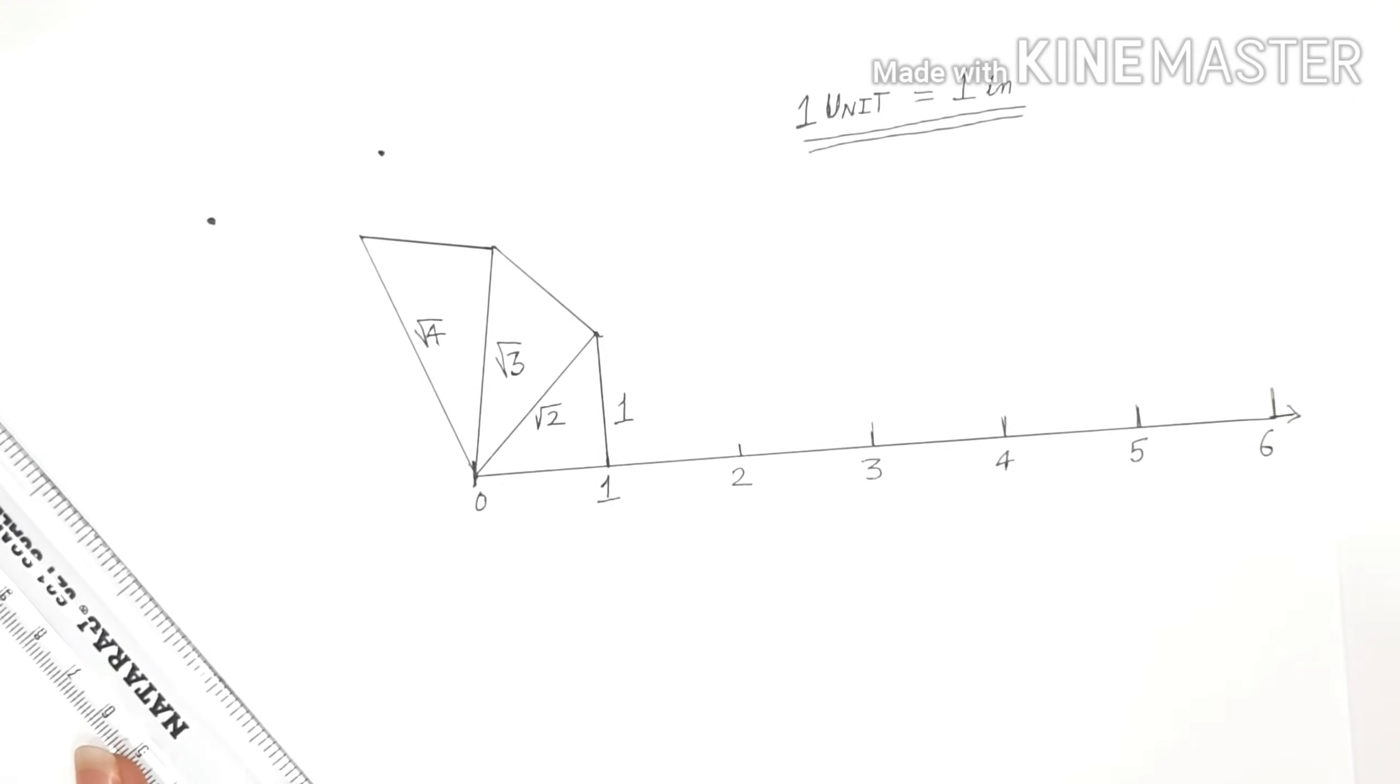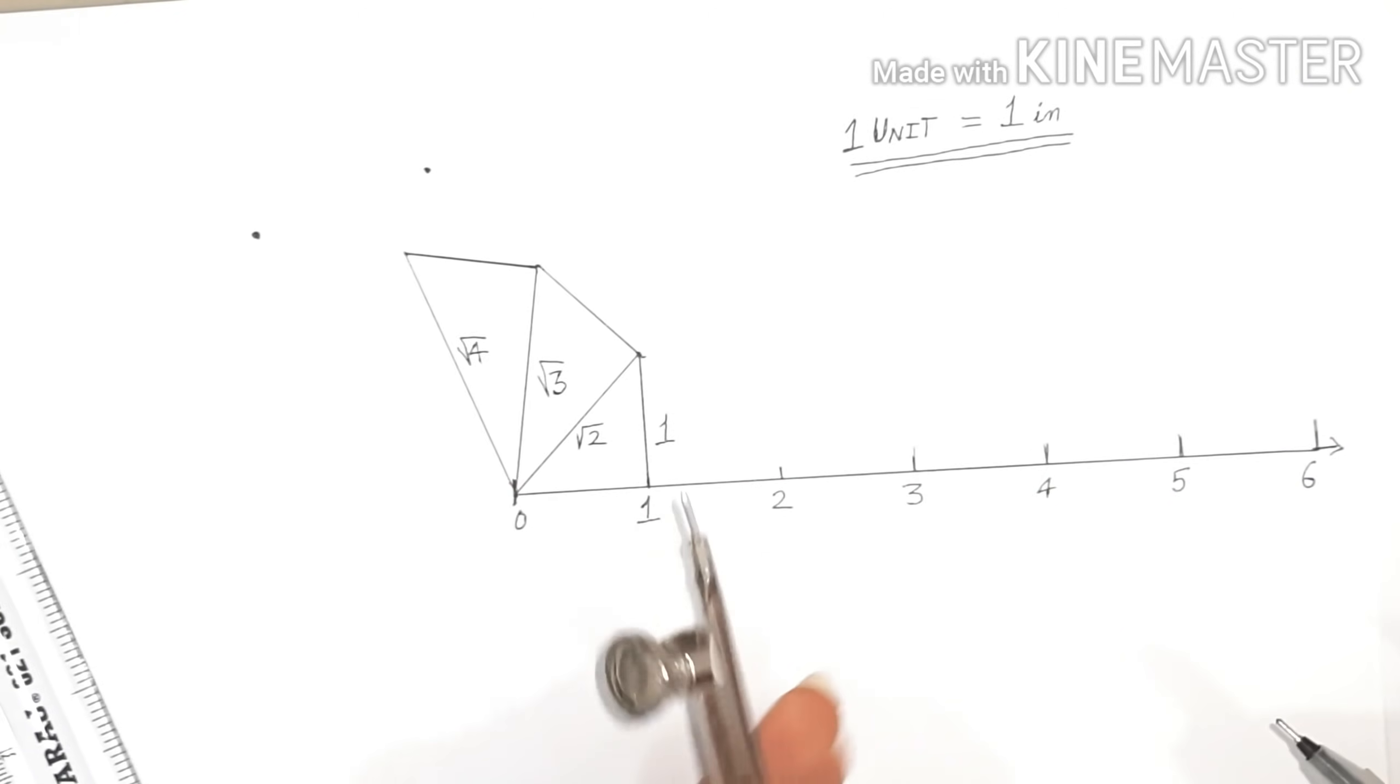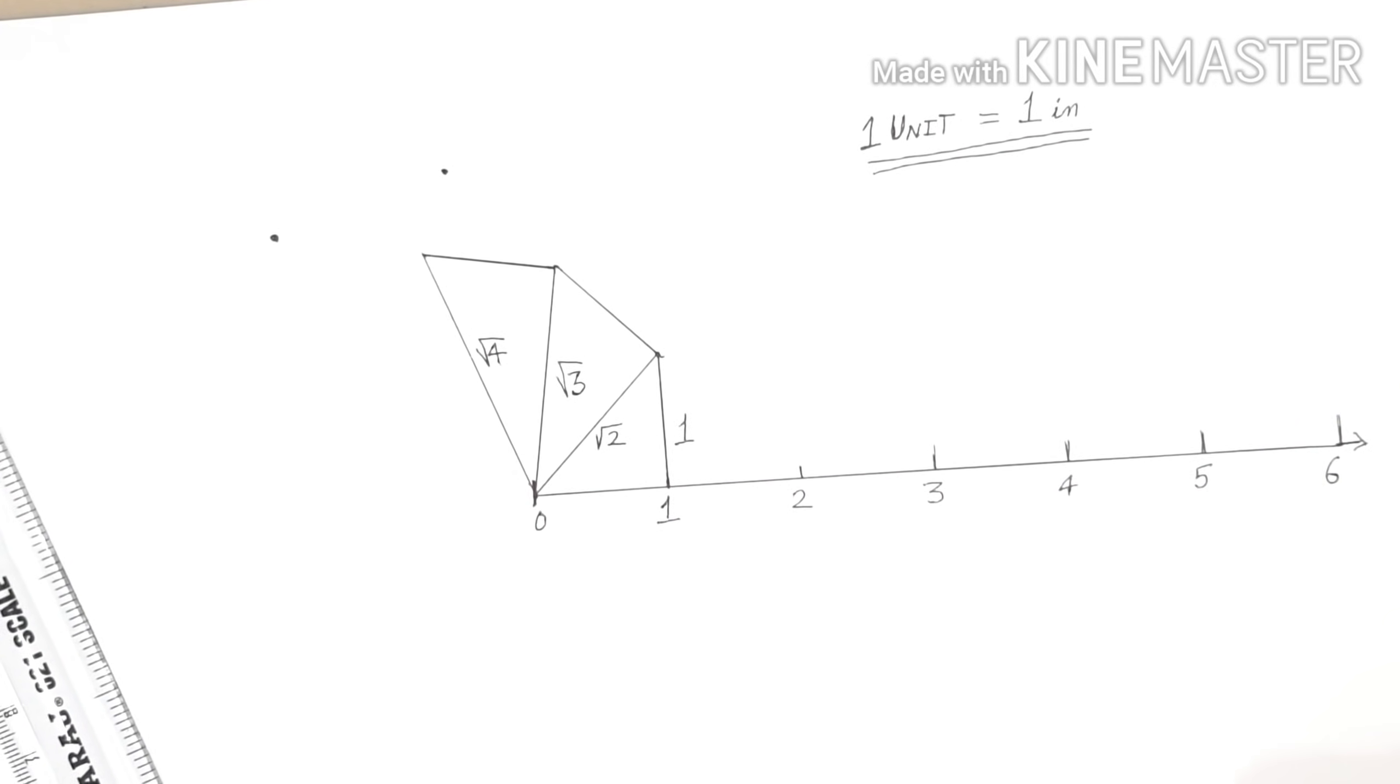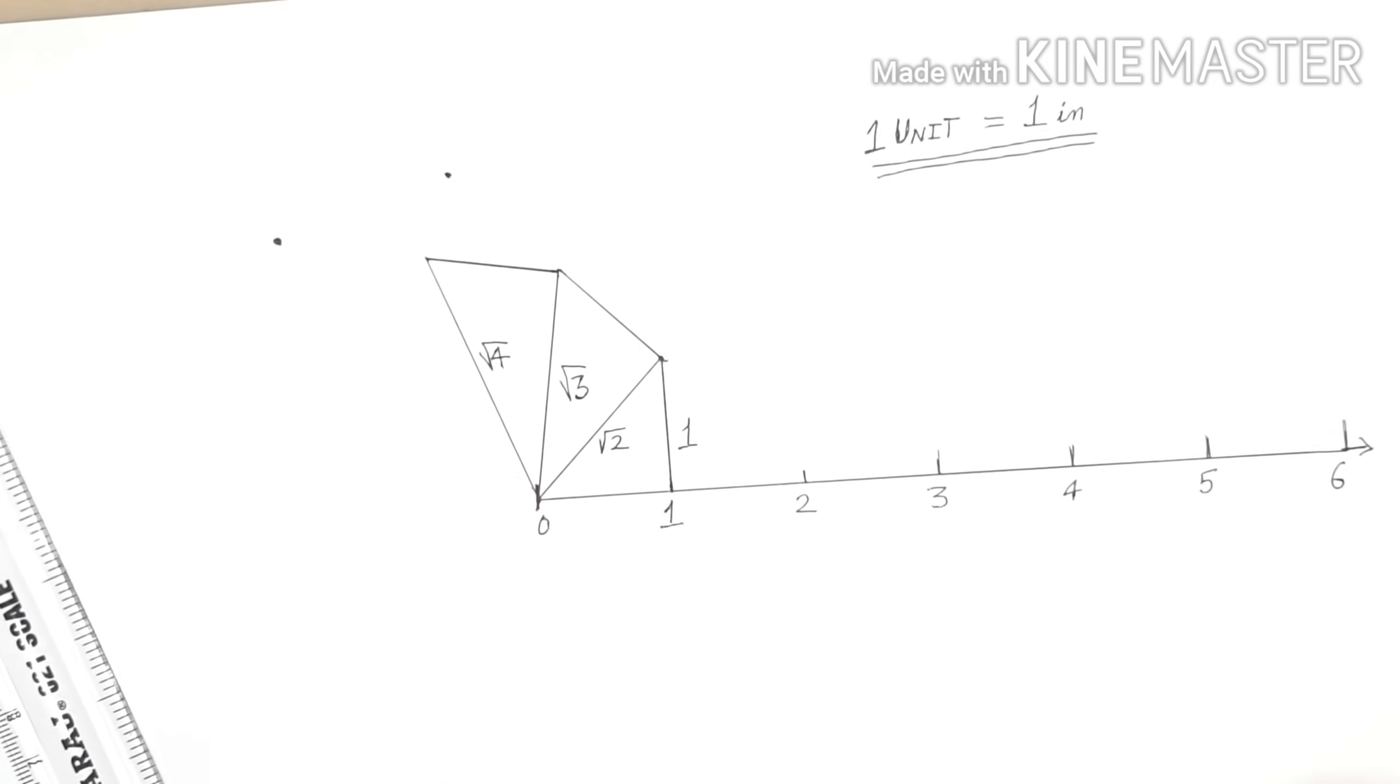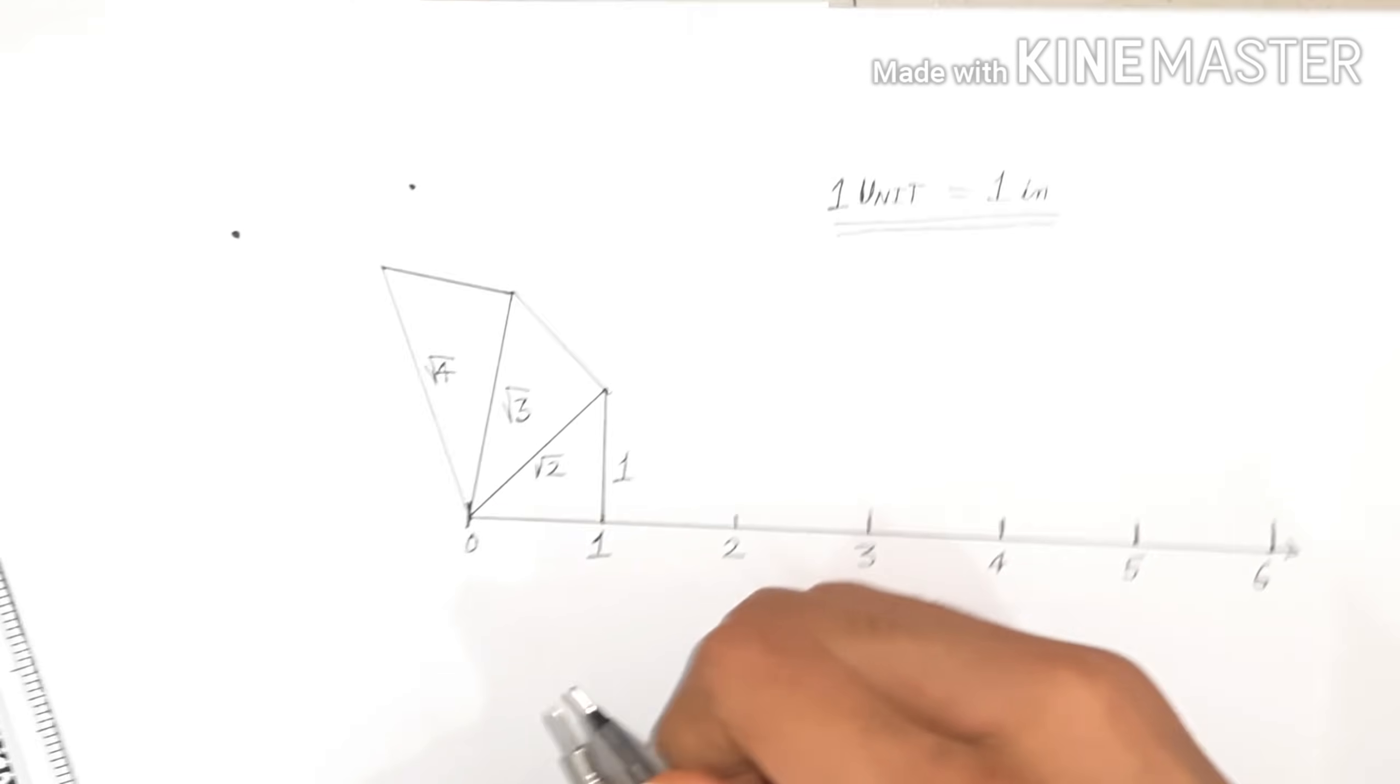So now I'll teach you how you can mark those numbers on the number line using compass. So we'll take our pen and compass. Now to start with, we'll mark square root 2 on the number line.